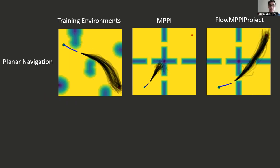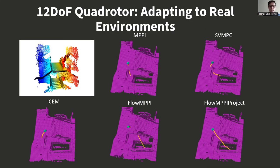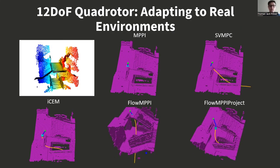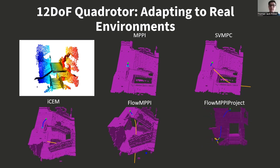We demonstrate our approach on a planar navigation task with double-integrated dynamics and a 12 degree of freedom under-actuated quadrotor task. In both tasks, we evaluate on challenging, novel environments. We additionally evaluate our proposed approach for the quadrotor on environments generated from real-world data, when our method is trained only on simple, artificially generated environments.